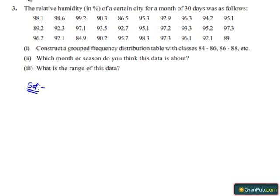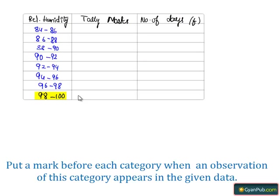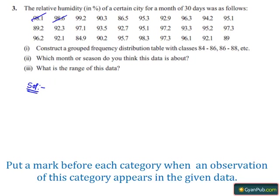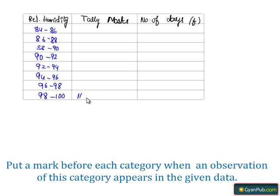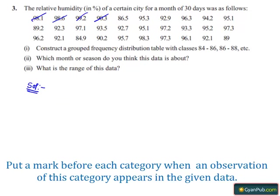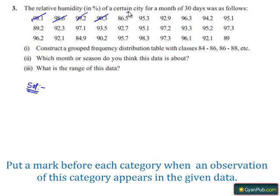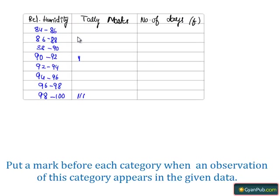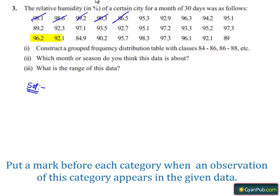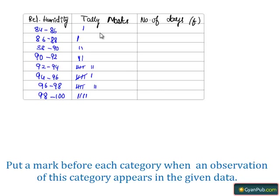Now seeing the question: 98.1 falls under the grouped data 98 to 100. Next, 98.6 and 99.2 also fall in their respective groups. 86.5 comes under 86 to 88. Cutting the following data and making the tally marks table, we get the distribution as follows.